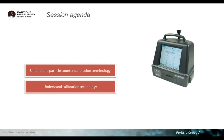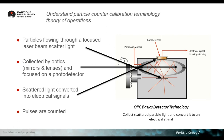Let's now have a look at particle counter calibration terminology. But first, I would like to show you how a particle counter works. What you can see on the right side is a drawing representing an instrument optical cell. This little black dot represents a particle flowing into the instrument optical cell. On the left side of the drawing, there is a laser diode which generates a red beam of light.